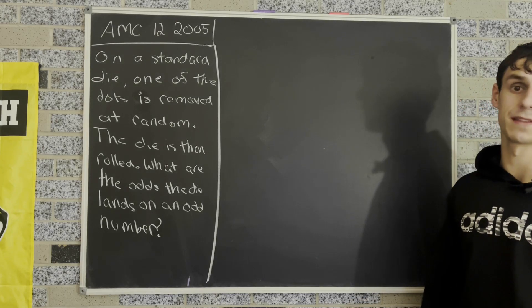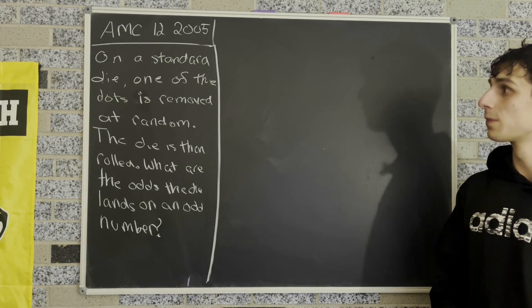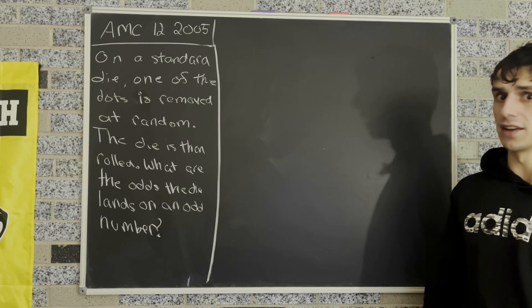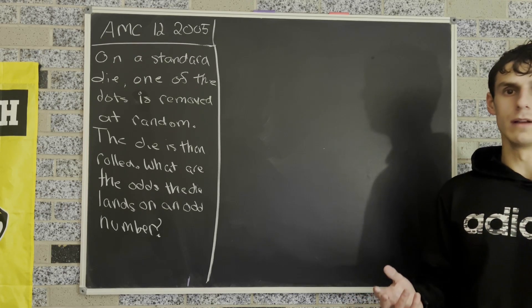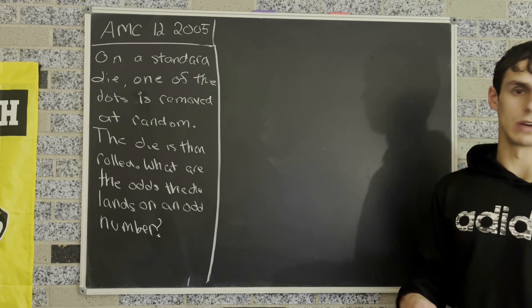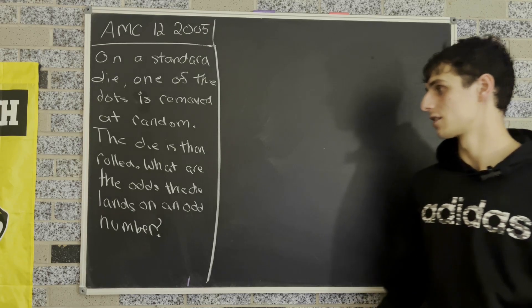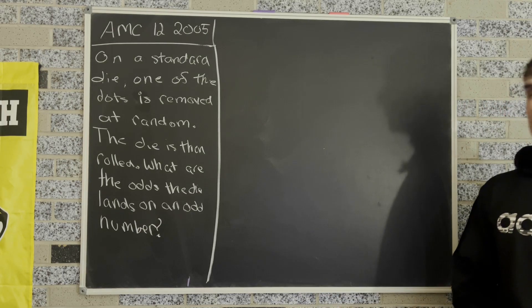Today's math puzzle comes from the AMC 12 math competition in the year 2005. It tells us that on a standard die, one of the dots is removed at random, and it clarifies that all the dots are equally likely to be chosen. Then the die is rolled, and it asks us to find the odds that the die lands on an odd number.